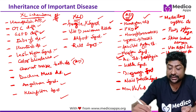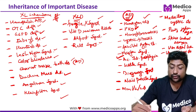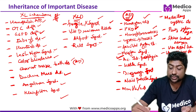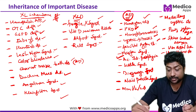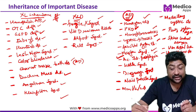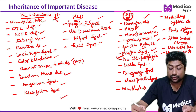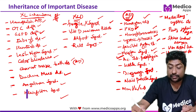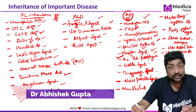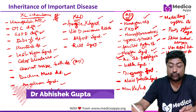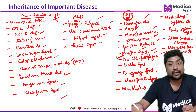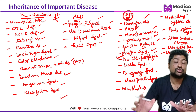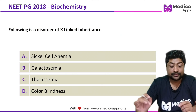To recap autosomal dominant disorders: Huntington's chorea, polycystic kidney disease, neurofibromatosis, cystic fibrosis, familial hypercholesterolemia, Marfan syndrome, acute intermittent porphyria, Liddle's syndrome, DiGeorge syndrome, Nail-Patella syndrome, MEN 1, 2, 2B, medullary cystic disease, Peutz-Jeghers syndrome, most spinocerebellar ataxia varieties, Von Hippel-Lindau syndrome, and Von Willebrand disease.